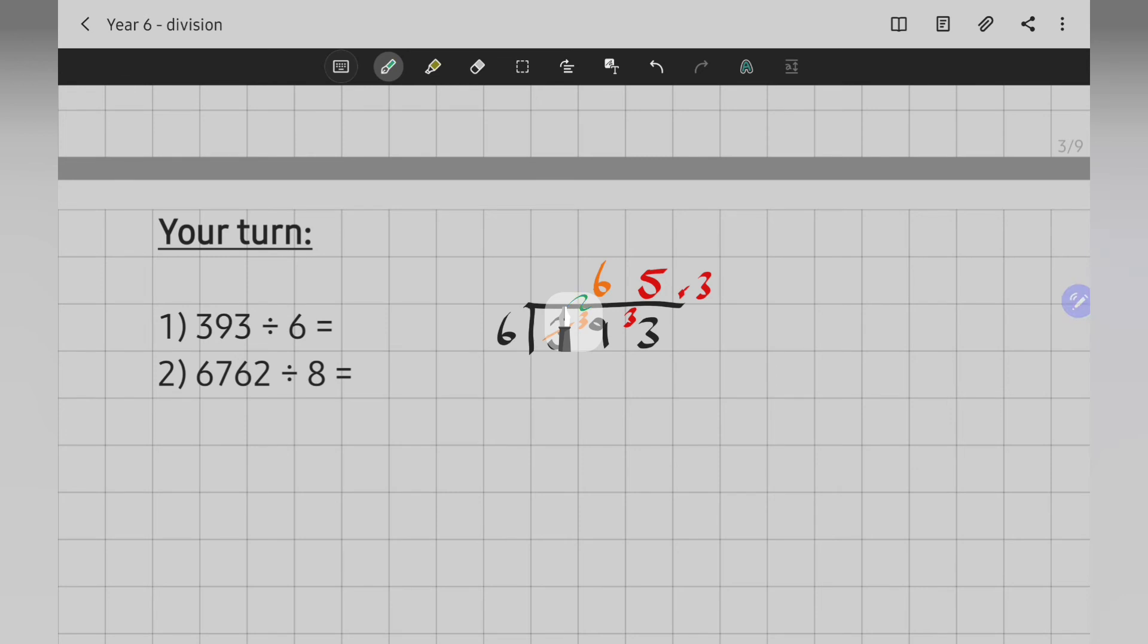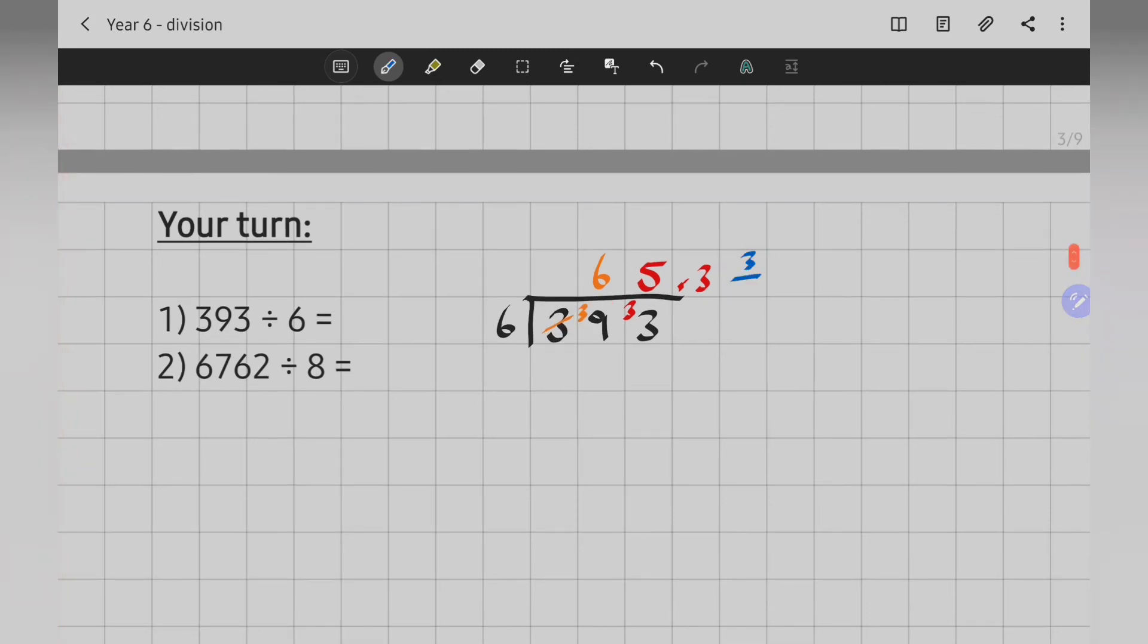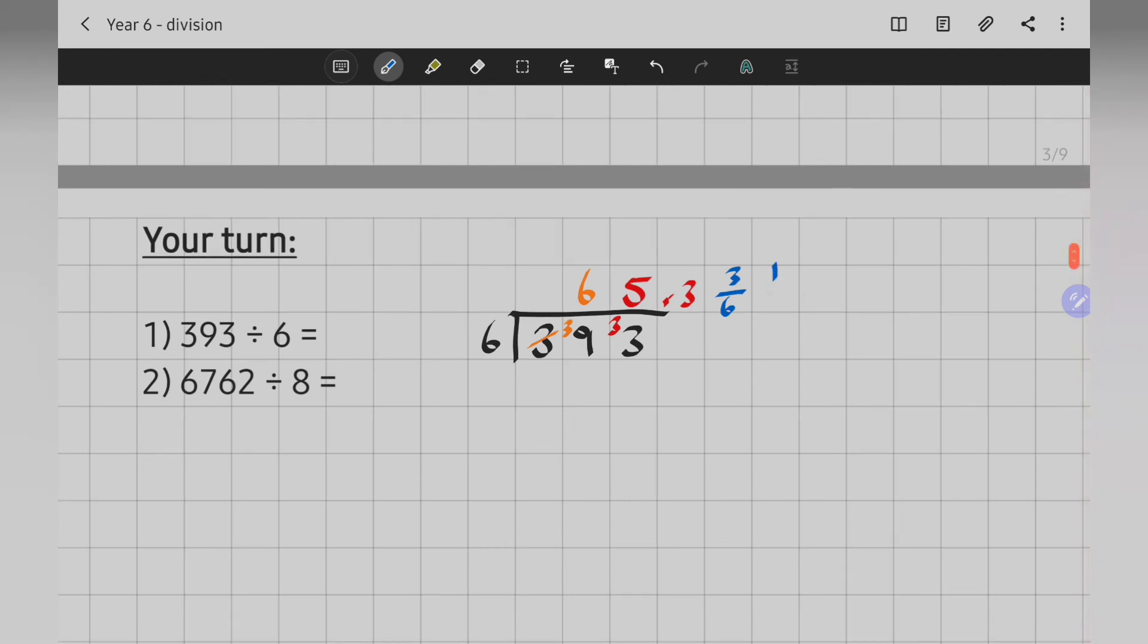If I wanted to show it as a fraction, that remainder 3 would be shown with the 3 at the top, my leftovers. And then I'd have my, what I'm dividing by underneath the 6. So, remainder 3 would be 3/6. Even better, you should have looked at 3/6. I might have thought, ooh, I can do something with this fraction. I can simplify it. So, you might have shown it as 65 and a half. Even better.